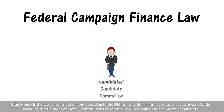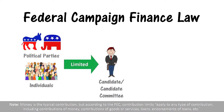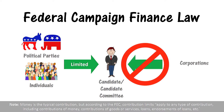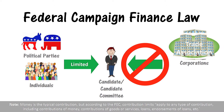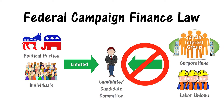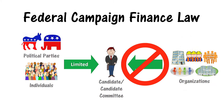Federal law limits contributions to political candidates or candidate committees from individuals and political parties. And it prevents contributions from corporations, including businesses, nonprofits, trade associations, and special interest groups. Labor unions are also prohibited from contributing. Going forward, I will refer to all of these by the general term: organizations.